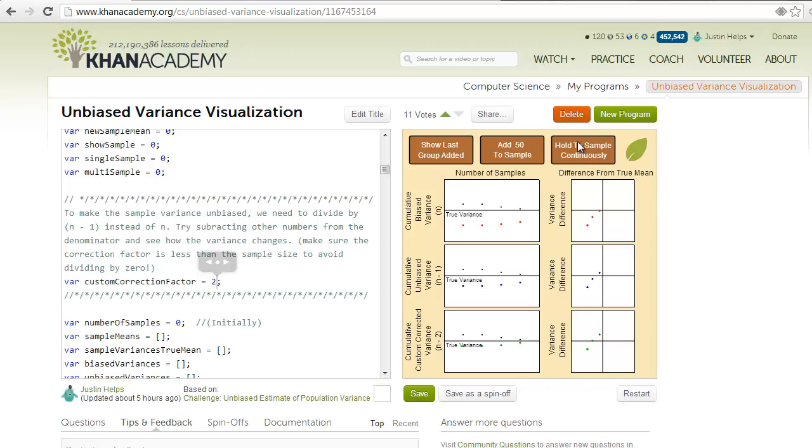Now if we look at a lot of sample groups, we notice that the variance found using the sample mean and dividing by n always has a lower variance than would be found using the true mean. And it ends up being systematically lower than it should be for a large sample.